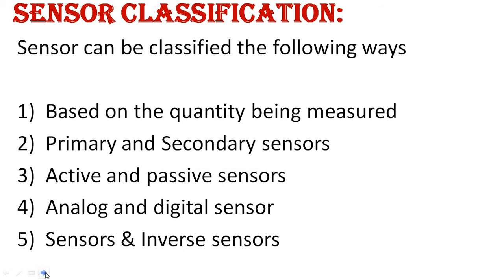First, sensors are classified based on the quantity being measured — physical quantities like temperature, pressure, humidity, stress, and strain. Second is primary and secondary sensors, which depend on the operating principle of the sensor. Third is active and passive sensors — some sensors require an external power supply and some do not; some are self-generating and others are not.